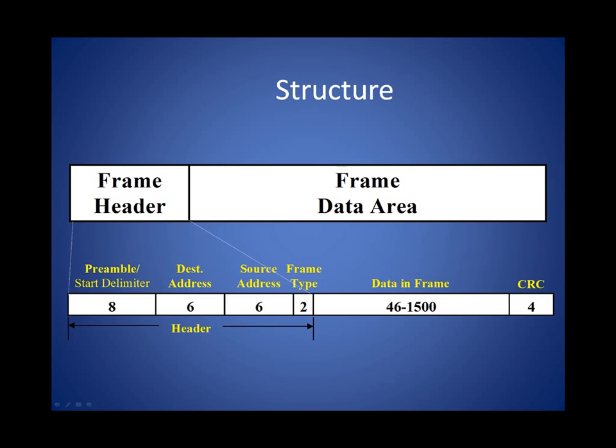Starting from the left, we have the preamble and the start frame delimiter. Then the destination MAC address, source MAC address, and frame type or control field. There's the data field — 46 bytes to 1500 bytes — followed by the frame check sequence. In Ethernet's case, that's actually a cyclical redundancy check, or CRC32.